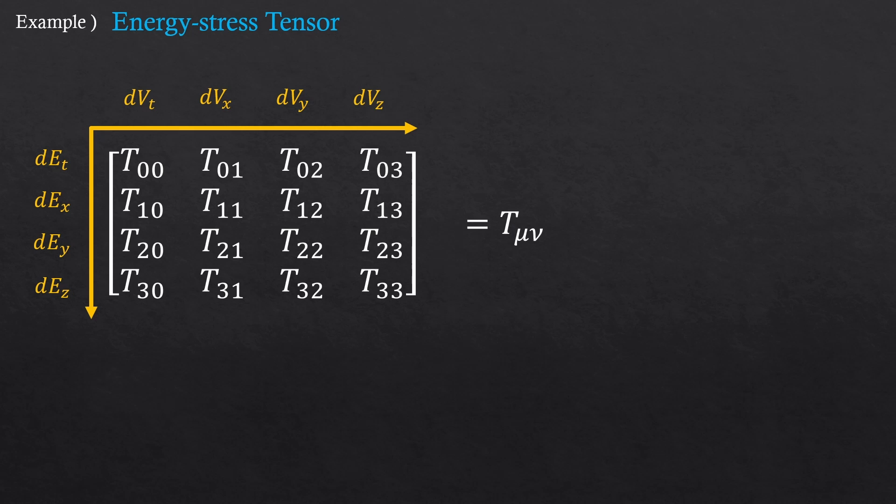So the row now corresponds to different components of energy, not force. And the column now corresponds to the volumes instead of the areas. But if you think about it, energy divided by the volume will still have the units of stress or pressure. So that's why it's called the energy stress tensor. It's a stress tensor expressed in terms of energy, okay?